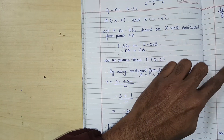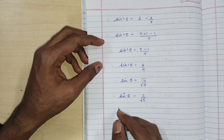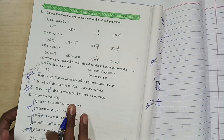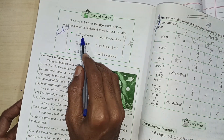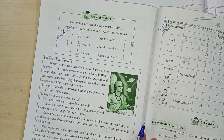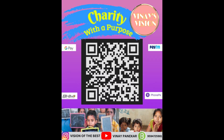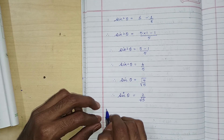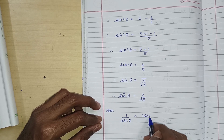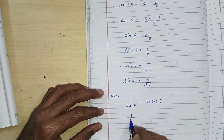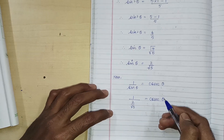So, sin has got its value, cos has got its value, sec has got its value, tan has got its value. Now what do we want to find? Cosec. The formula is: 1 upon sine theta is equal to cosec theta. Therefore, 1 upon 2 upon root 5 is equal to cosec theta, giving us root 5 upon 2 is equal to cosec theta.